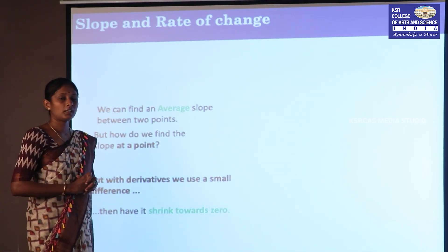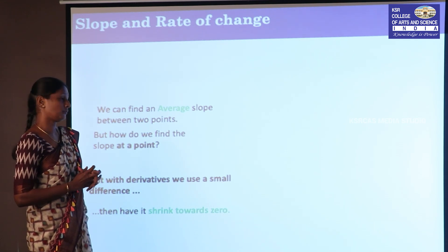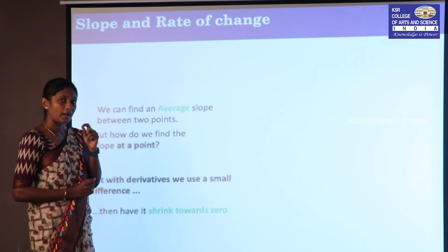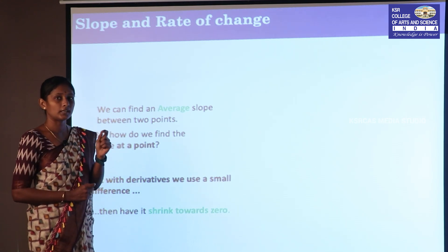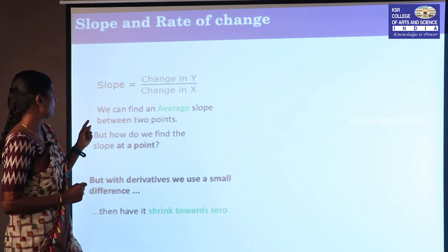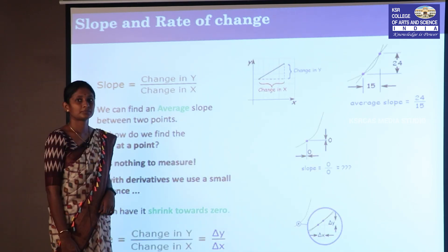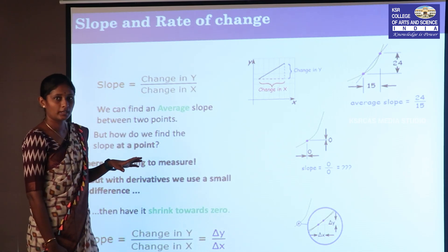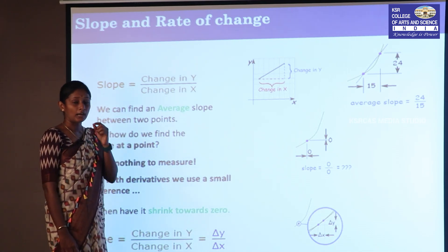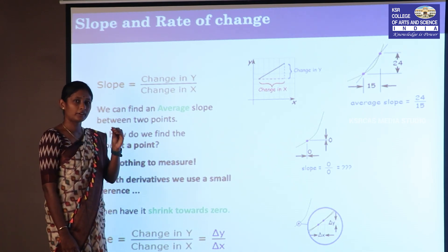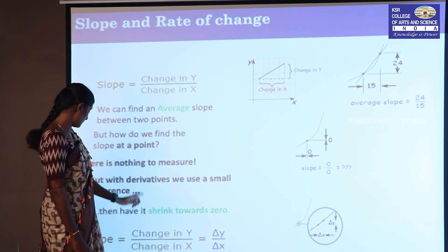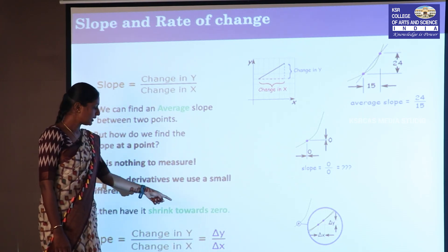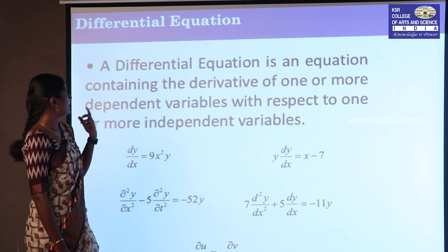Regarding slope and rate of change: we can find the slope between two points, but using derivatives we can find the slope at a single point using small changes. Slope is equal to the change in y divided by the change in x — that is, Δy divided by Δx.